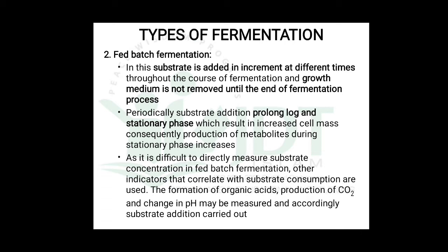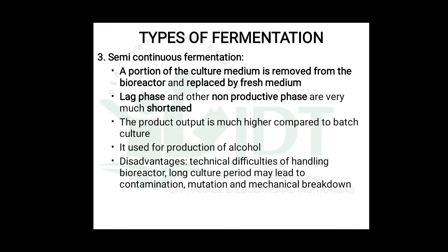During the stationary phase, production of metabolites increases. Since it is difficult to directly measure substrate concentration in fed-batch fermentation, other indicators that correlate with substrate concentration are used — such as formation of organic acids, production of carbon dioxide, and change in pH — and substrate addition is carried out accordingly.